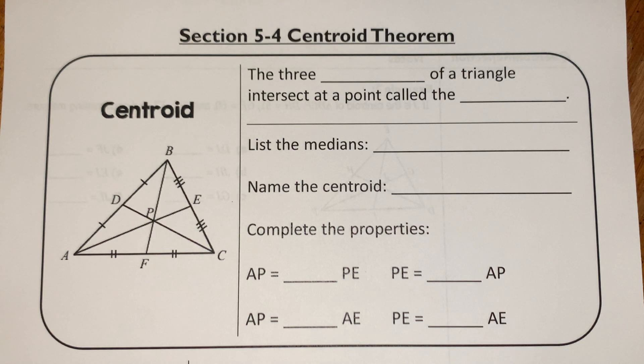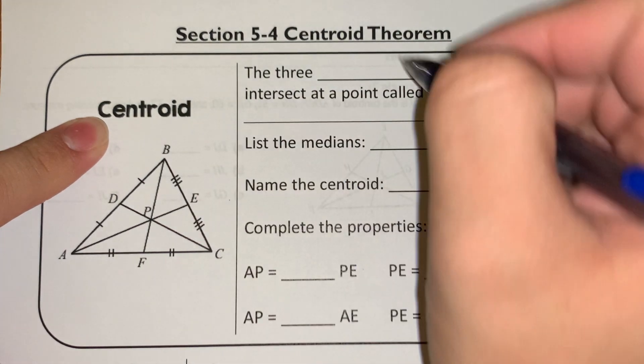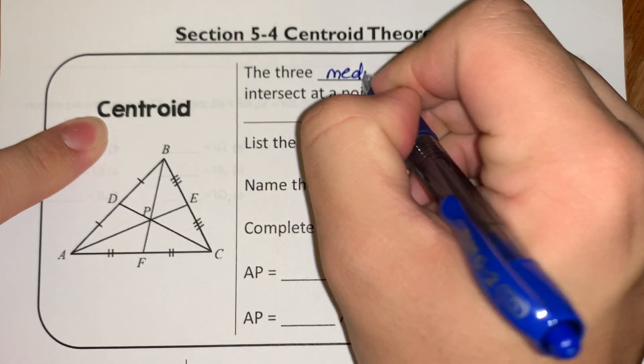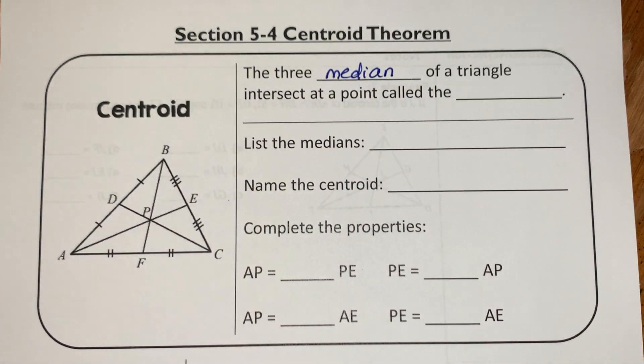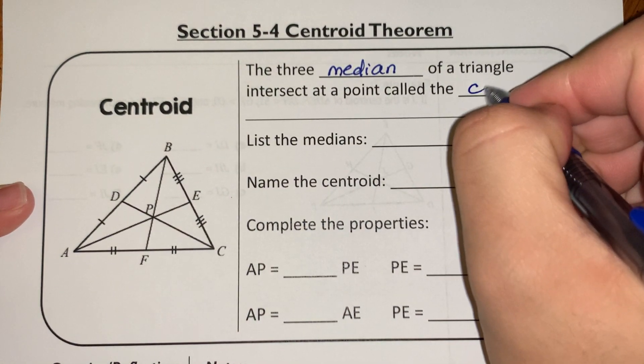This is another center of a triangle that we're going to explore. In order to find the centroid of a triangle, you have to think about what the three medians of a triangle are, and those three medians come together at the point called the centroid.